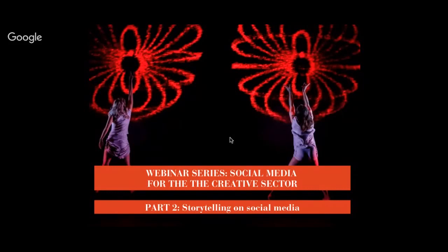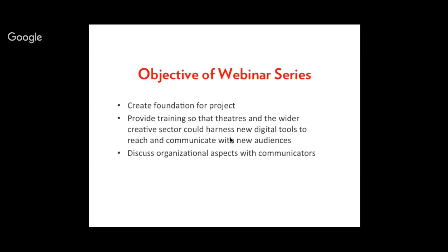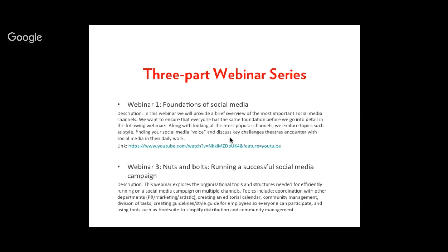This is the second webinar in a three-part series. Let's take a step back to remember why we're here — the European Theatre Lab is all about experimentation and learning new skills. We created this series so that theater communicators could have specialized training, become in-house experts at their theaters, work with creative departments, and learn how to use new tools to reach new audiences, because many audiences — especially certain groups — live online. In the first webinar we looked at foundations of social media; today we focus on visual storytelling tools; and in the last webinar we'll discuss the daily work of running a social media campaign.